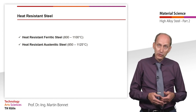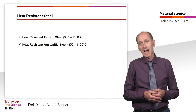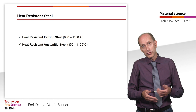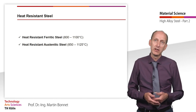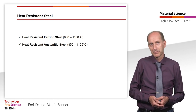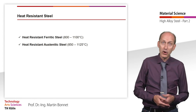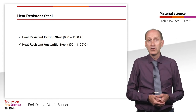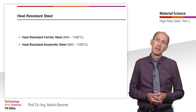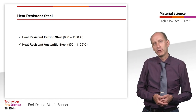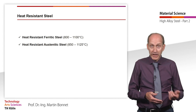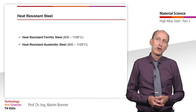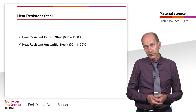Compared to heat-resistant ferritic steel, heat-resistant austenitic steel is easier to produce, easier to process and also has a lower tendency to embrittlement. With different alloy contents, operating temperatures of 850 to 1125 degrees Celsius can be realized. Applications from roll sheets, strip and profile range from automotive to process industries.